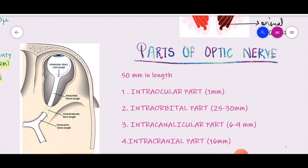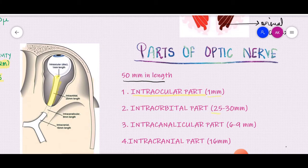The optic nerve is about 50 millimeters in length and can be divided into four parts from the optic disc to the optic chiasm. Part one is the intraocular part — present inside the eye, about 1 mm. Part two is the intraorbital part — present inside the orbit, about 25 mm. Part three is the intracanalicular part — present inside the optic canal, about 9 mm. Part four is the intracranial part — present inside the cranial cavity, just before the optic chiasm, about 16 mm.